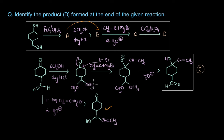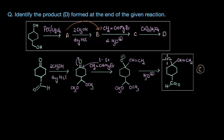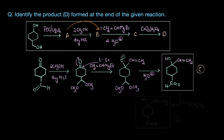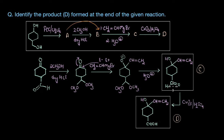Moving ahead, in the final step we are reacting product C with CrO3 in the presence of H2SO4. This is a very strong oxidizing agent which oxidizes the aldehyde group to the corresponding carboxylic acid. So our final product D has the aldehyde group oxidized to a COOH group — the corresponding carboxylic acid — while the other groups remain intact. This is the structure of product D formed at the end of this reaction.